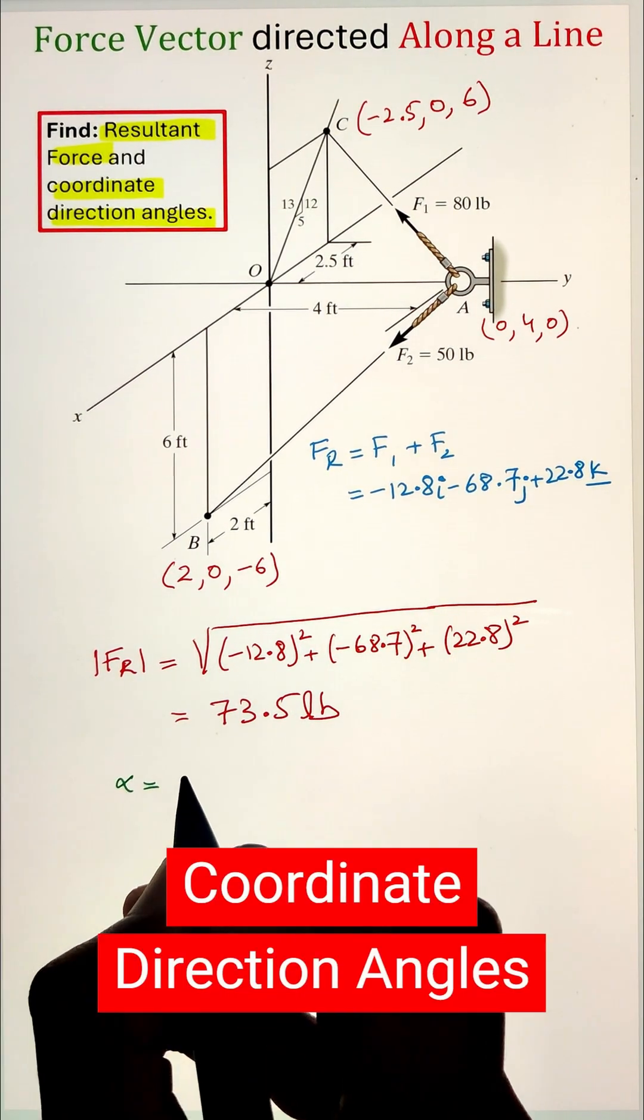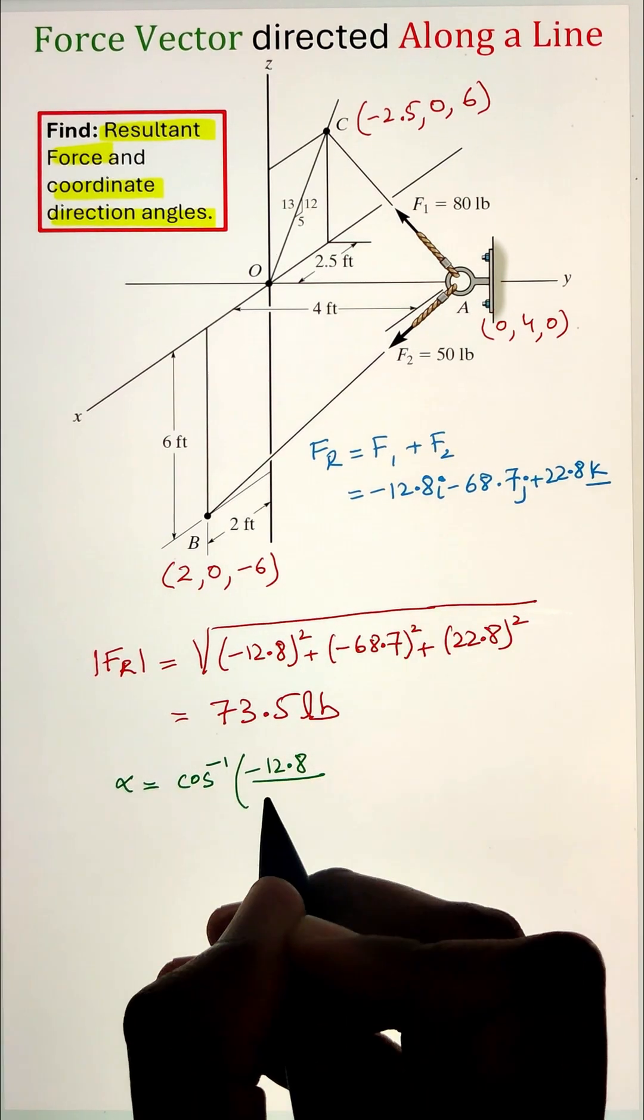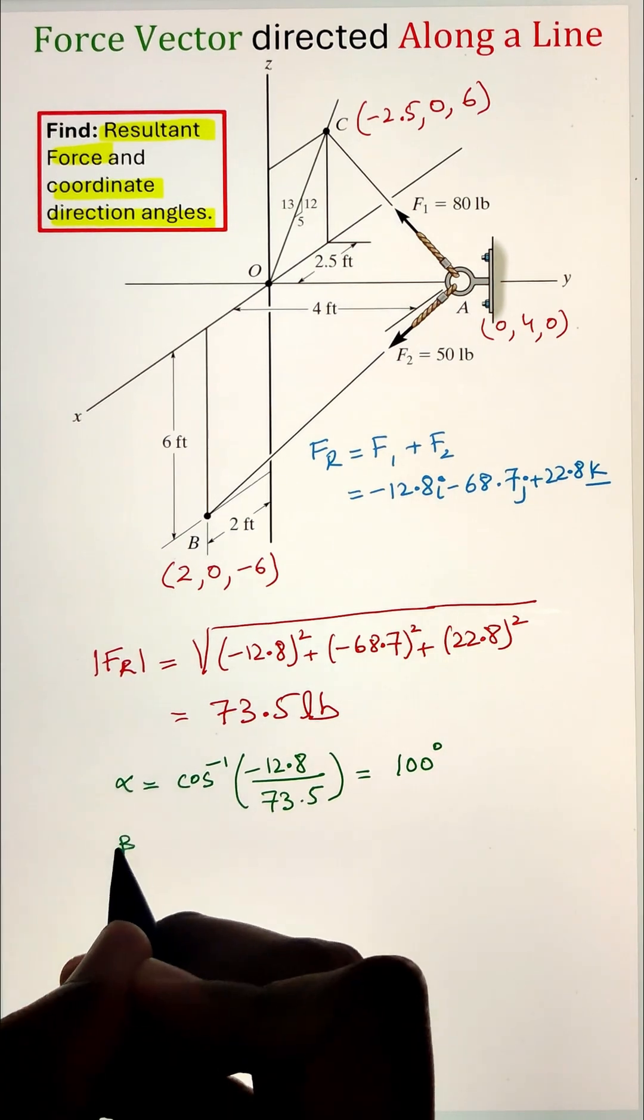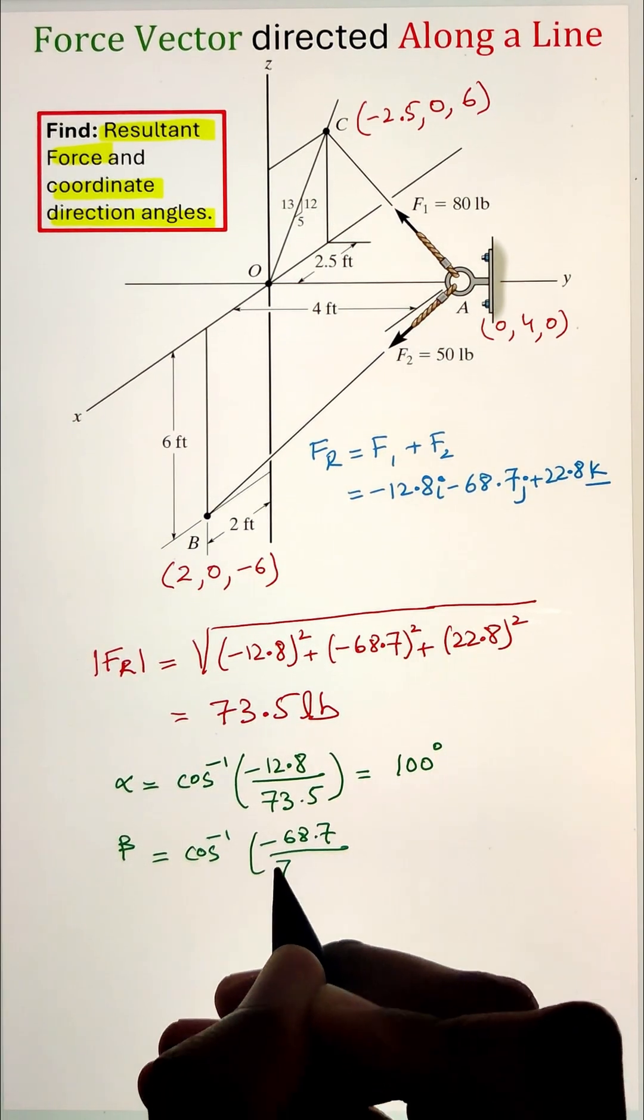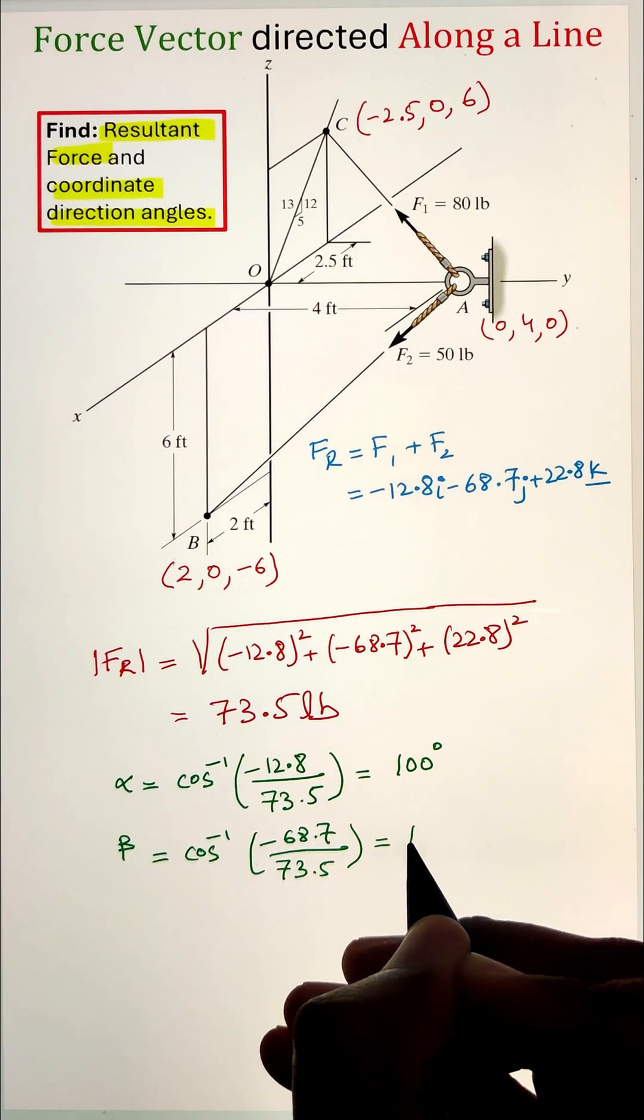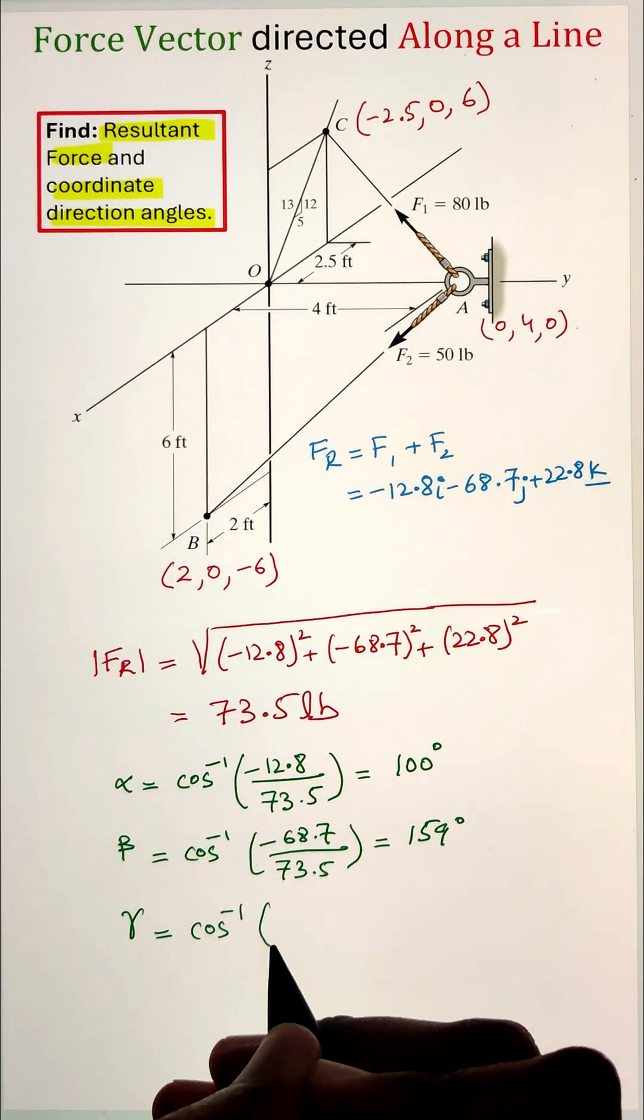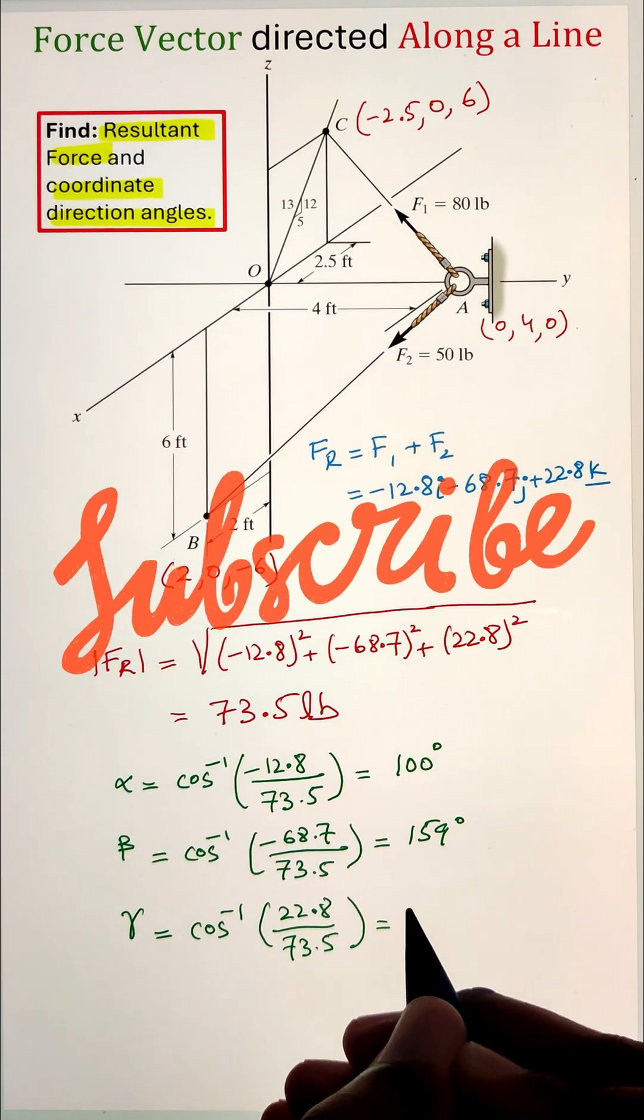For coordinate angles, alpha, beta, and gamma are the angles that the force makes along the x, y, and z axes respectively. Alpha is the cos inverse of the x component of the resultant force divided by the magnitude of the force, and it is coming around as 100 degrees. Similarly, we can calculate beta and gamma by utilizing the y and z components of the resultant force.